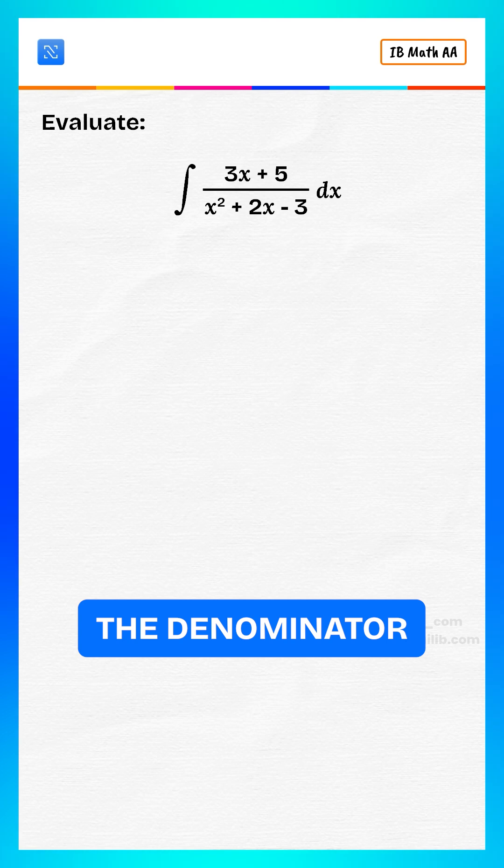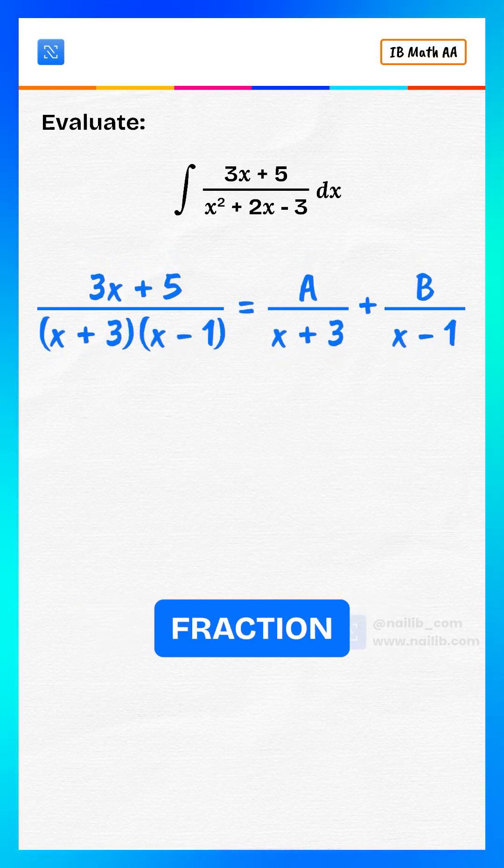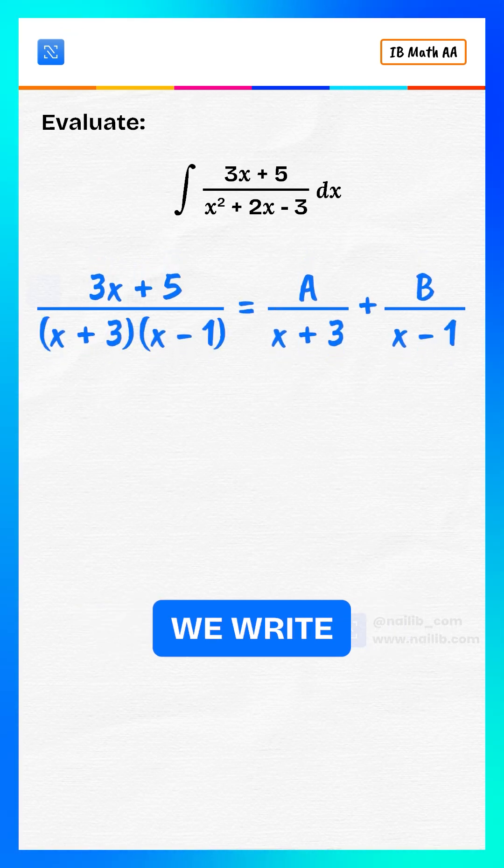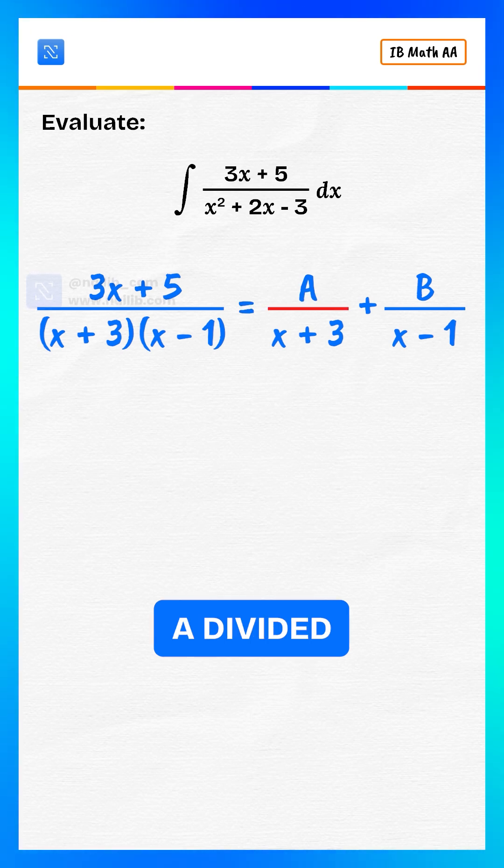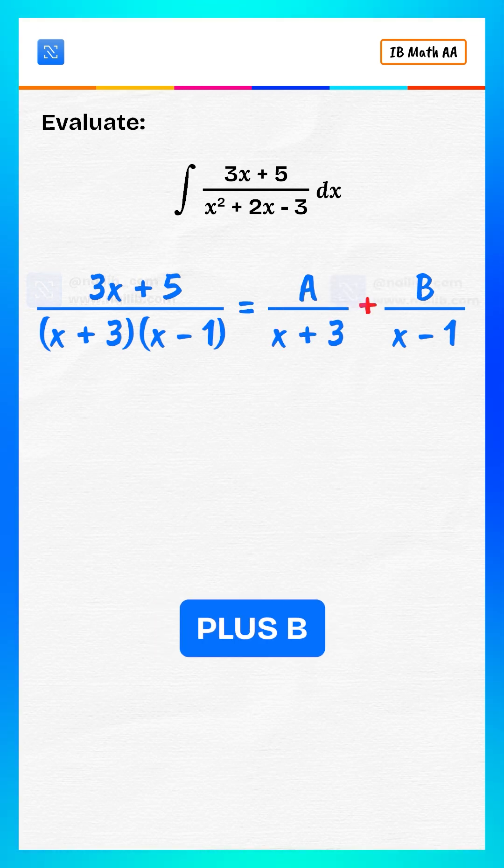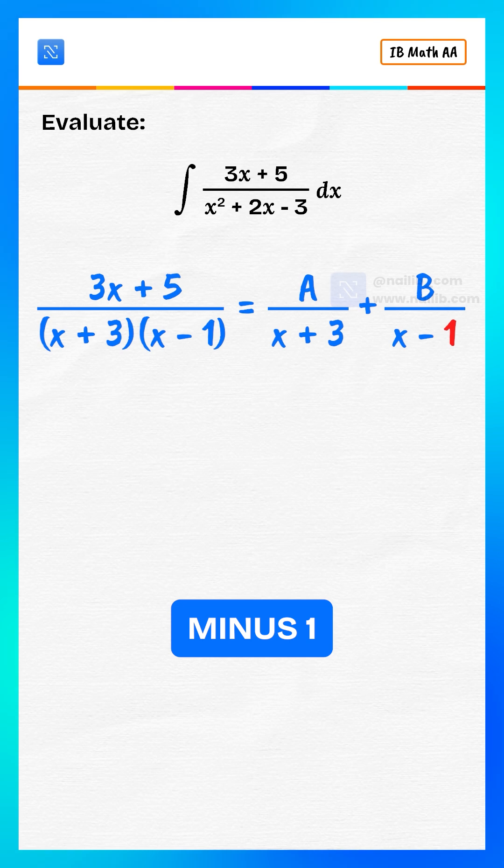Factor the denominator. Use partial fraction decomposition. We write 3x plus 5 divided by x plus 3 times x minus 1 equals a divided by x plus 3 plus b divided by x minus 1.